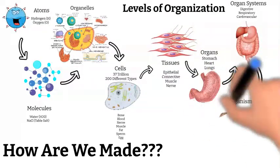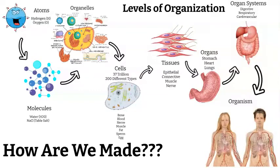Finally, we move to the highest level of organization. When all the organ systems get together, they form an organism. An organism is a living being that's made up of cells and can independently perform all physiologic functions necessary for life. In humans, all cells, tissues, organs, and organ systems of the body work together to maintain the life and the health of the organism — so the organism is you, and everything that's put together to make you.